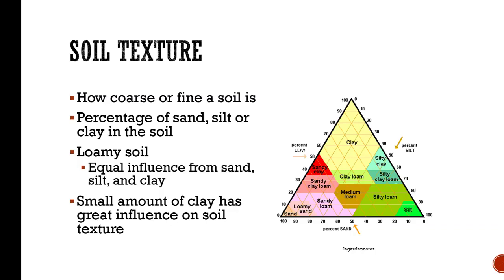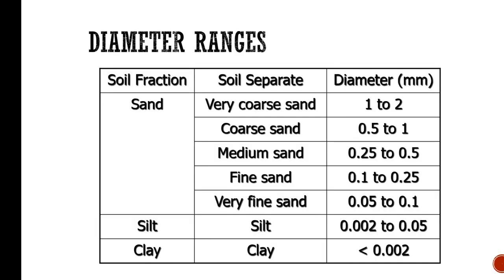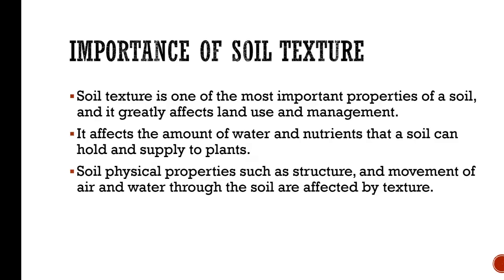A very small amount of clay has the greatest influence on soil texture. If you look at this triangle, going up to 20% clay on the left-hand side, you start to see clay in the name of the soil. Soil texture is the relative proportion of sand, silt, and clay — there are various sizes of sand, from very coarse to very fine, but silt and clay are much smaller. Soil texture is one of the most important properties of a soil. It greatly affects land use and management, the amount of water and nutrients the soil can hold and supply to plants, and the movement of air and water through the soil.